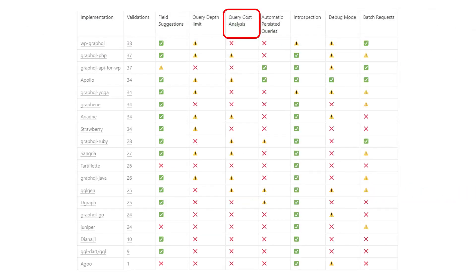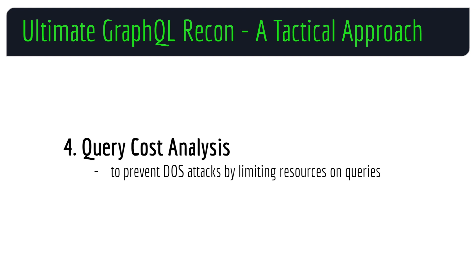Query cost analysis is another security control in place to prevent DOS coming from queries that are computationally complex. The idea is to set limits on the amount of resources that a single query can consume on the server, thereby ensuring that a single malicious or misbehaving client cannot monopolize the server's resources, thus denying service to other legitimate clients.